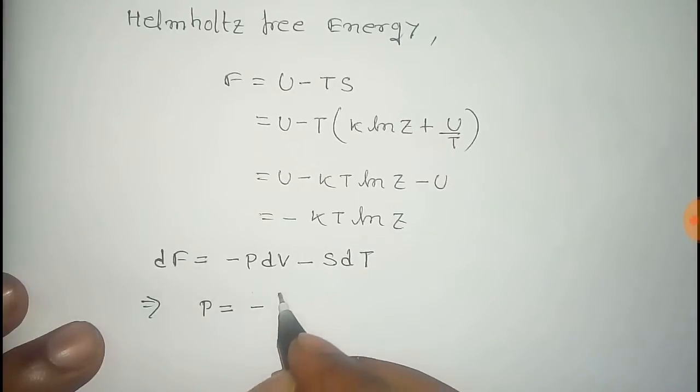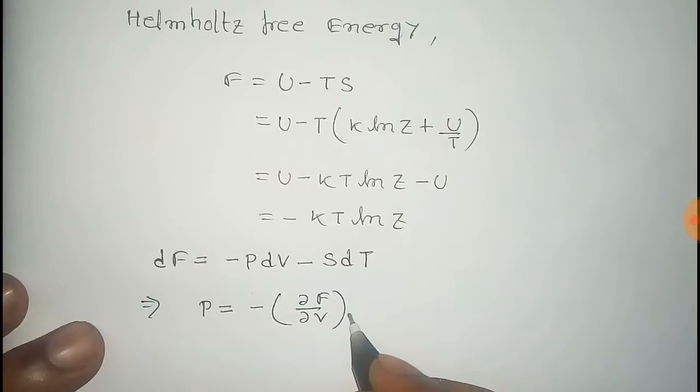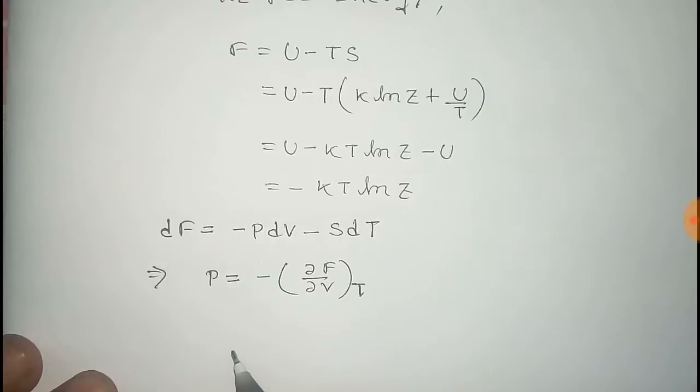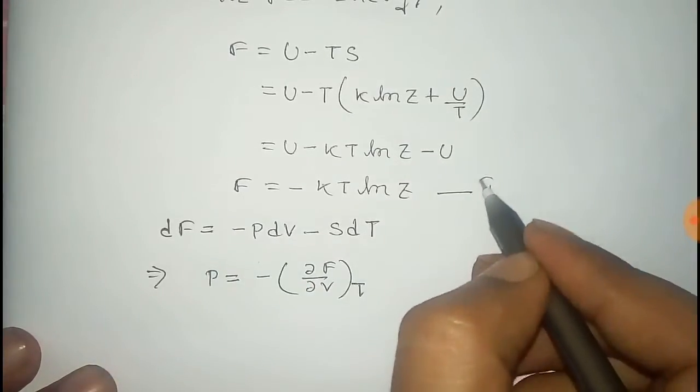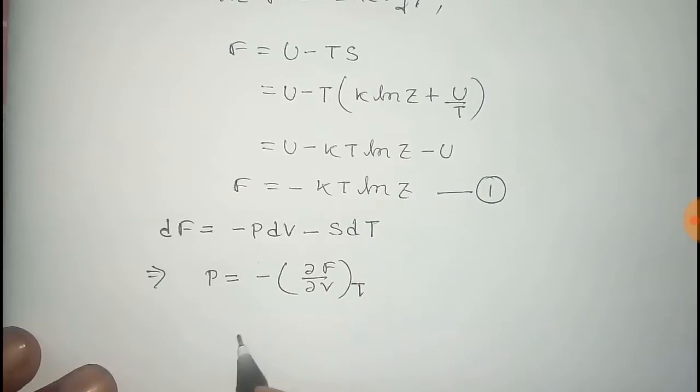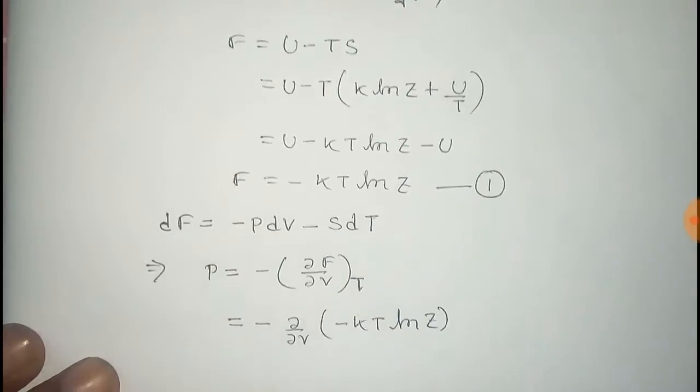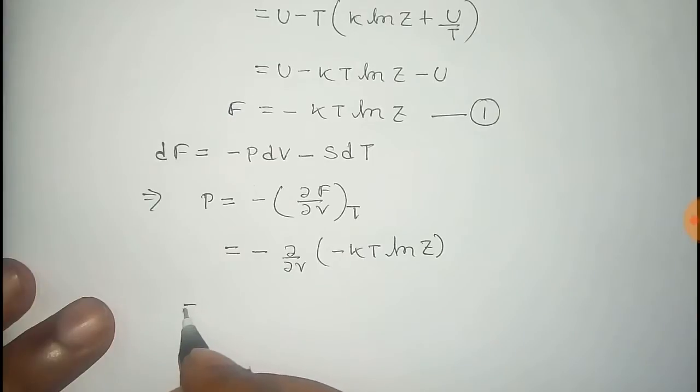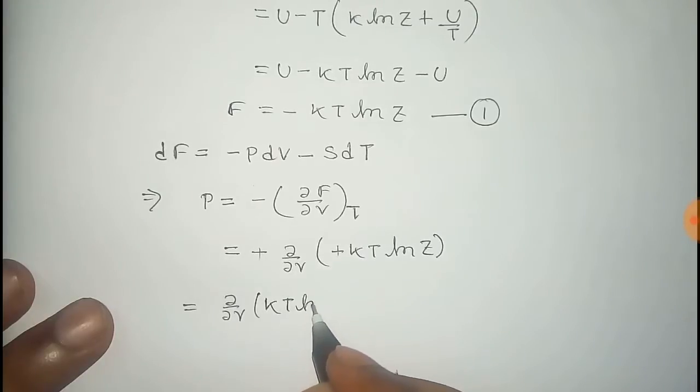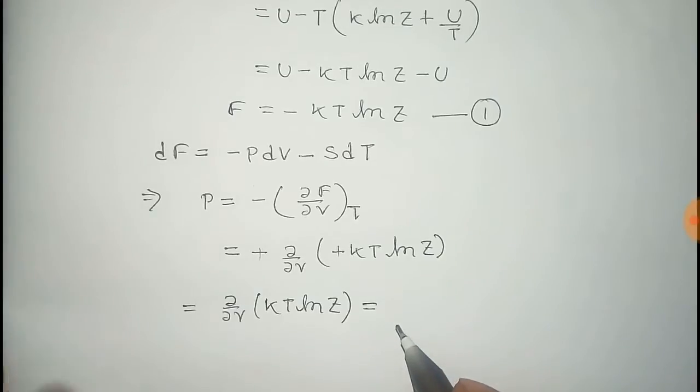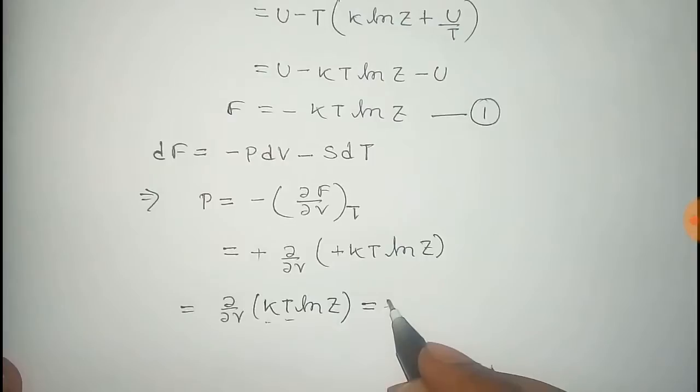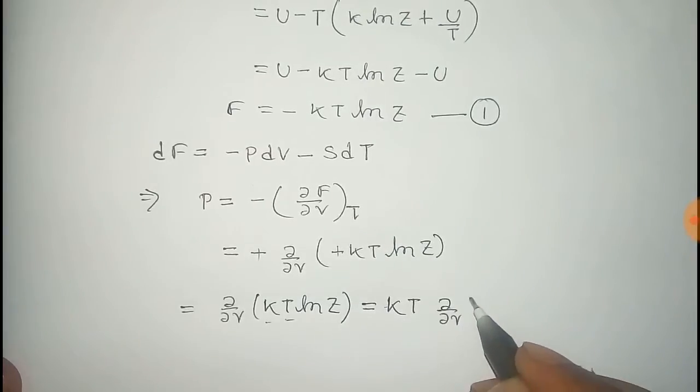Now in this equation we have to put the value of F from equation 1. So P equals minus partial over partial V of minus kT ln Z. The minus signs cancel out, so P equals kT partial over partial V of ln Z. Here k is the Boltzmann constant and T is also constant, so both come out of the differential.